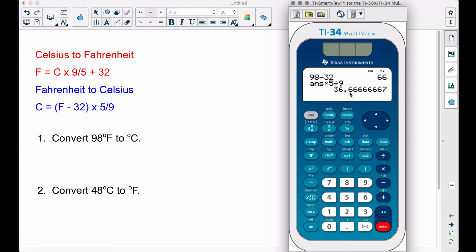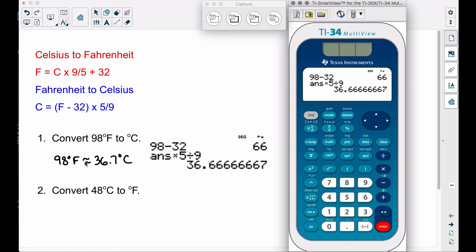So there's that answer. Now let's do number two: convert 48°C to °F. The better option here is to use the red formula. Since we know what Celsius is, we can plug it in right there. So let's take that 48.